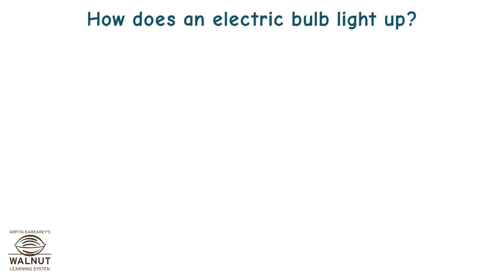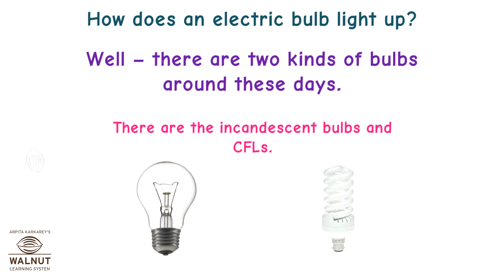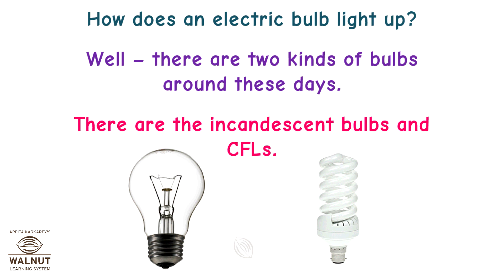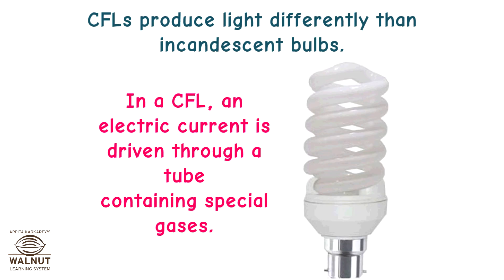How does an electric bulb light up? Well, there are two kinds of bulbs around these days: incandescent bulbs and CFLs. In an incandescent bulb, electric current runs through a wire filament and heats the filament until it starts to glow. CFLs produce light differently than incandescent bulbs. In a CFL, an electric current is driven through a tube containing special gases.